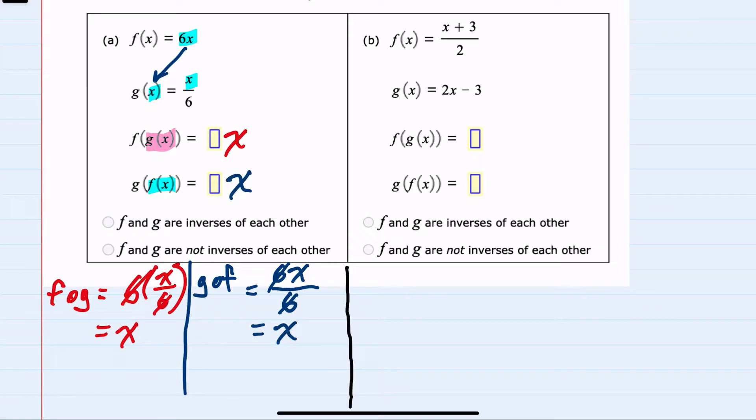So for both of these composite functions, f of g of x and g of f of x, the result is x. That means the input equals the output. So if you put in 5, you get out 5. That is the definition of inverse functions. And we actually performed the test because for inverse functions, the composites should equal x, or whatever the variable is that we're plugging in.